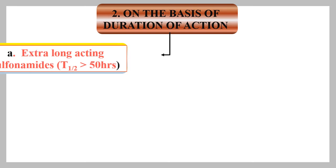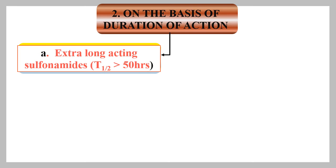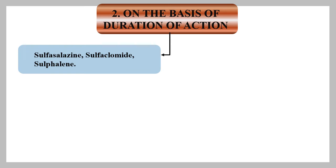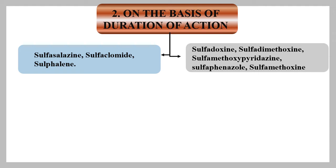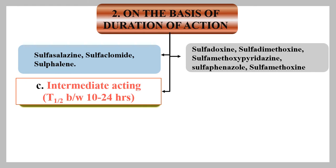On the basis of duration of action, sulfonamides are classified as extra long acting, long acting, intermediate acting, and short acting. Extra long acting sulfonamides have a half-life greater than 50 hours; examples include sulfacilazine, sulfacilomide, and sulfalen. Long acting sulfonamides have a half-life greater than 24 hours; examples include sulfadoxine, sulfamethoxypyridazine, sulfaphenazole, and sulfamethoxine.